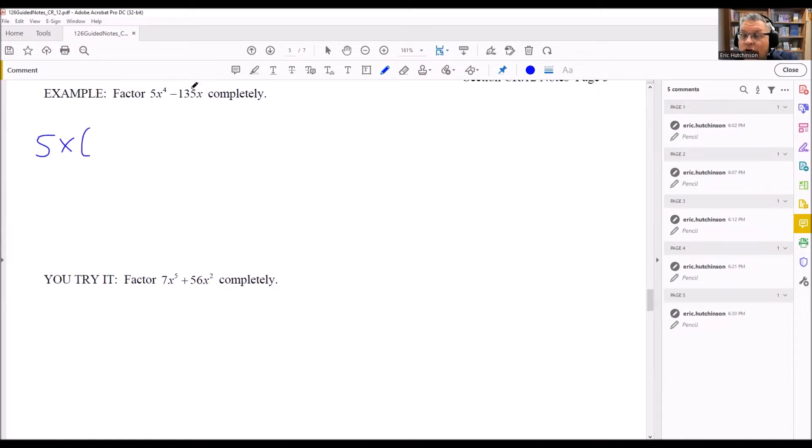So what's left over is we're going to have to take each of these individually, and we're going to divide them by 5x to get the part that's inside the parentheses. 5x to the 4th divided by 5, the 5s would cancel. I have 4 xs here. I'm taking out 1, which means that there's going to be x cubed left over.